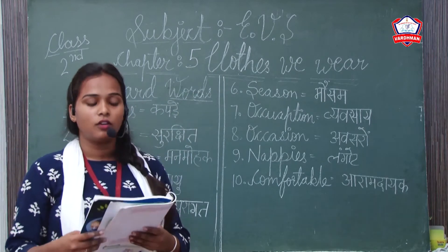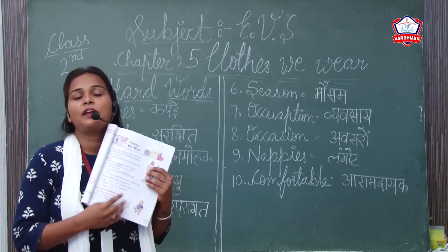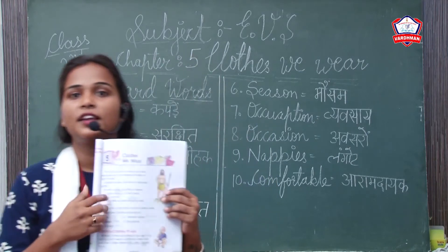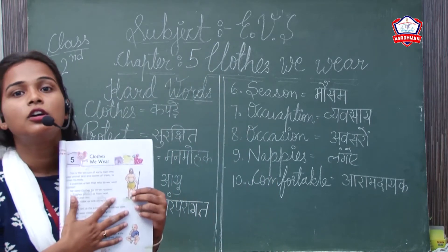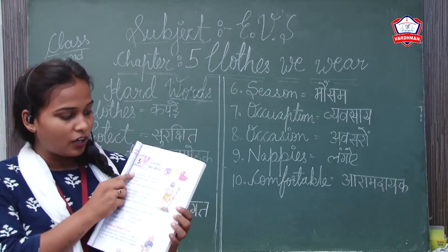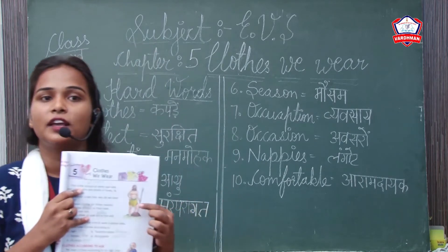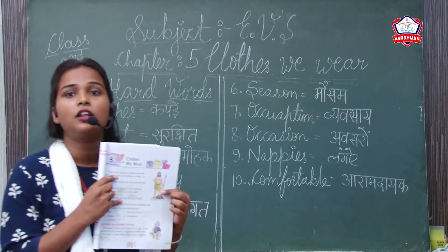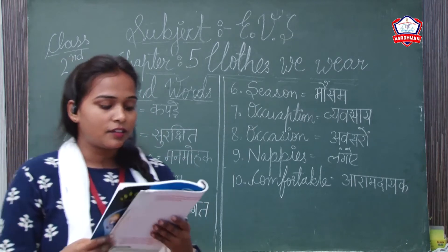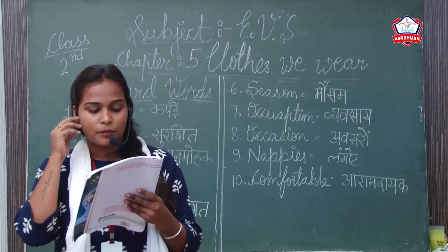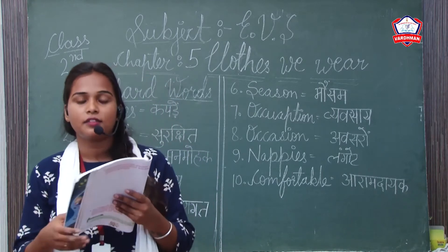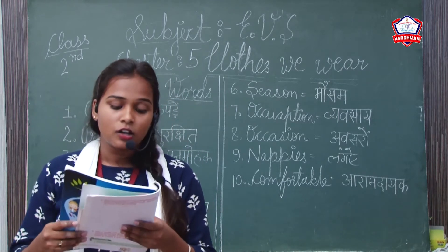This is the picture of the early man — see in your book. This is the picture of early man who wore the cloth of skin of animals and leaves of trees. Early man used animal skin and leaves of trees to cover his body.